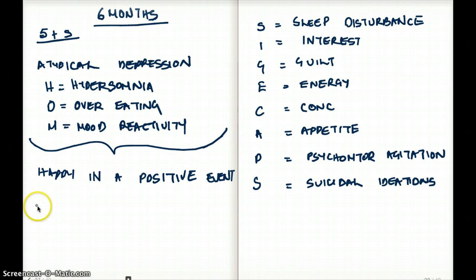Last of all, how do we treat atypical depression? We treat atypical depression by using MAO inhibitors and SSRI.